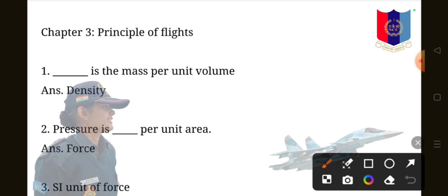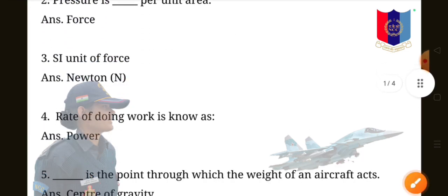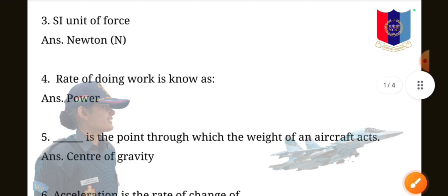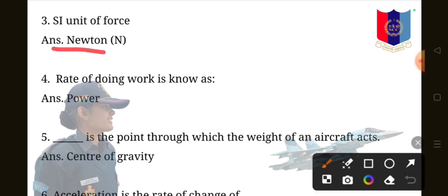Question 1: dash is the mass per unit volume. The answer is density is said to be the mass per unit volume. Question 2: pressure is dash per unit area. The answer is pressure is force per unit area. Question 3: SI unit of force. The answer is Newton.